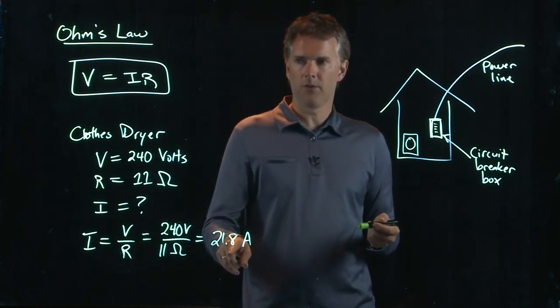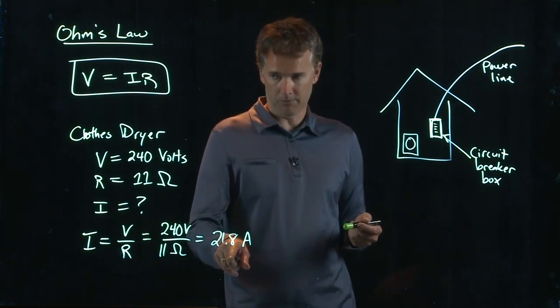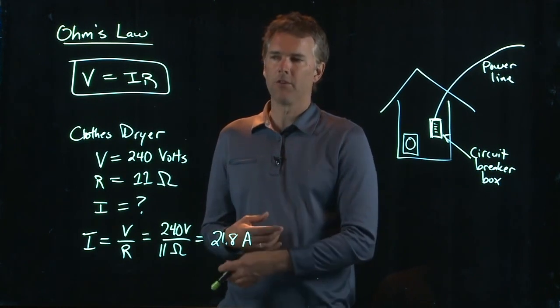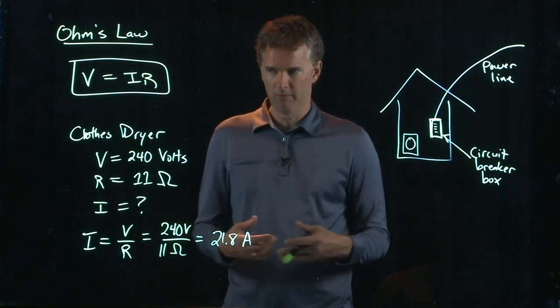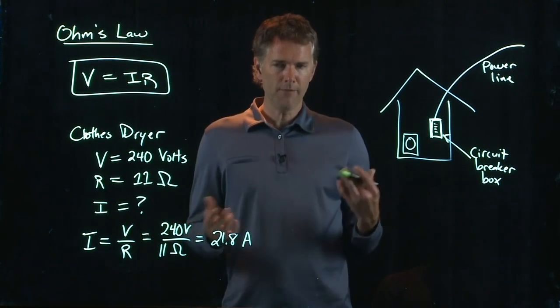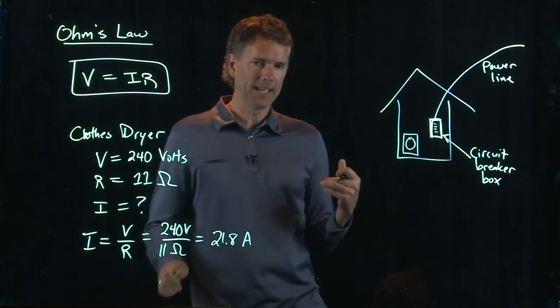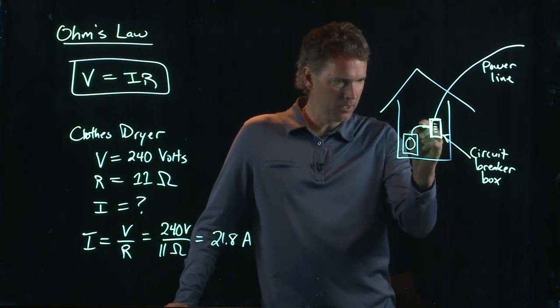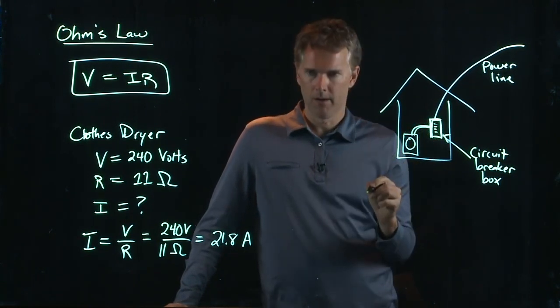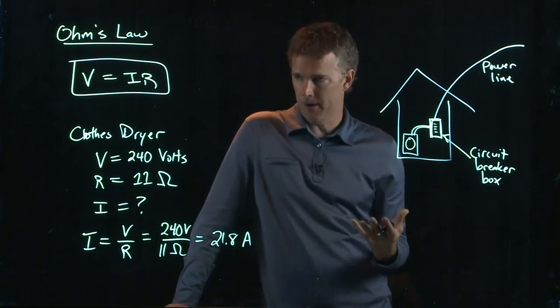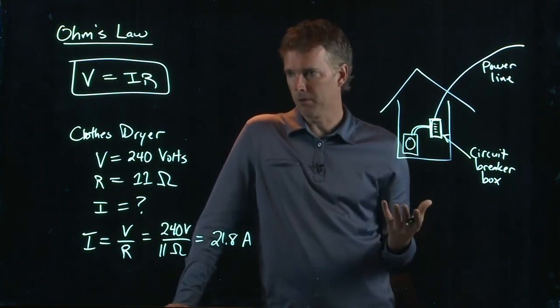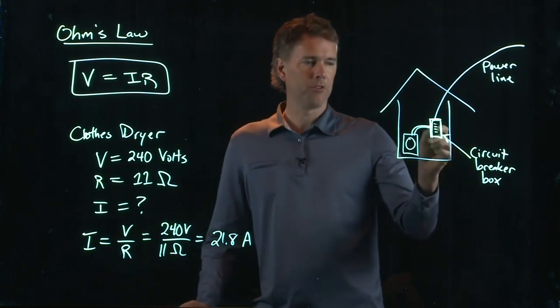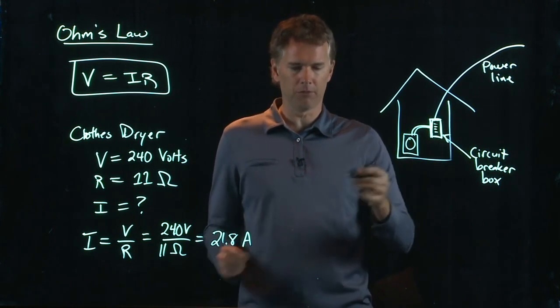Your clothes dryer is trying to draw 21.8 amps. But let's say the clothes dryer malfunctions and it starts to draw four times that amount, 40 amps. If it does that, bad things can happen. Namely, the wires that are going to the clothes dryer can get hot and burn up. And if they do that, then your house can burn down. And so, to prevent that, they put circuit breakers right here, which is essentially a little safety switch.